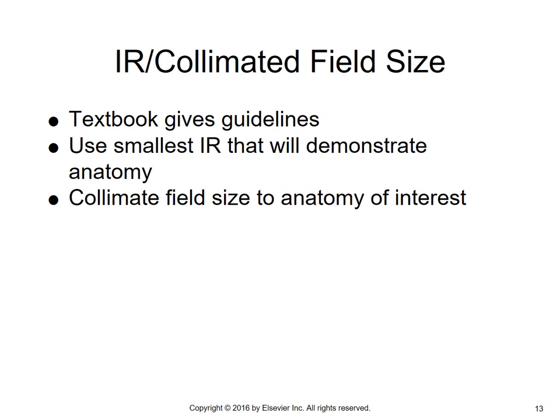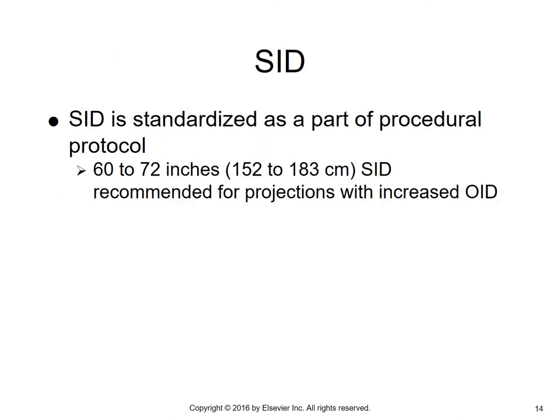The IR collimated field size: use the smallest IR that will demonstrate the anatomy. Generally an 8 by 10 size collimation will suffice. SID is standardized at 60 to 72 inches. 72 inches is used for the lateral because of the large OID between the cervical spine and the detector.